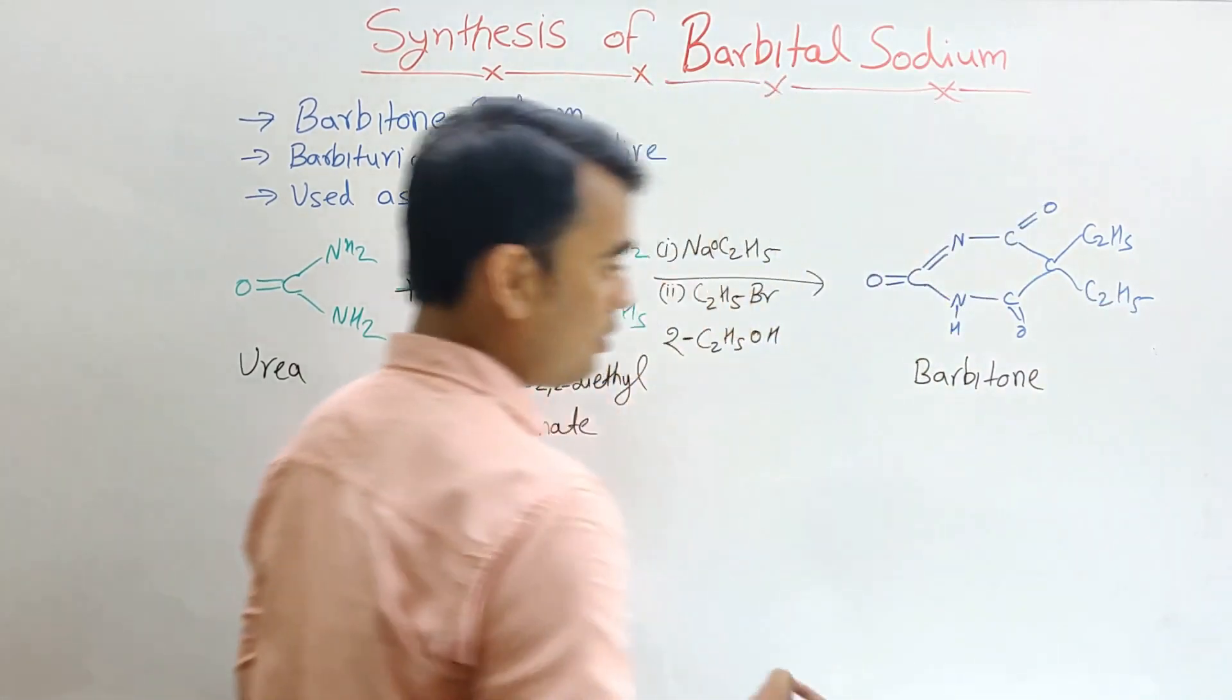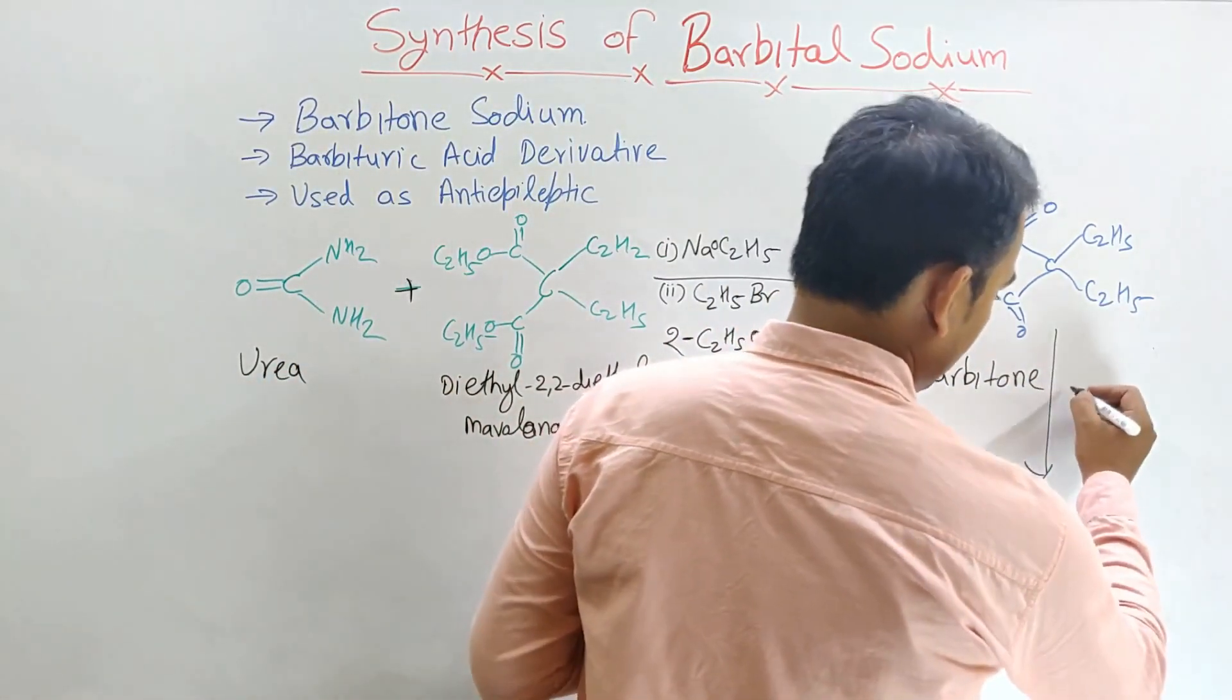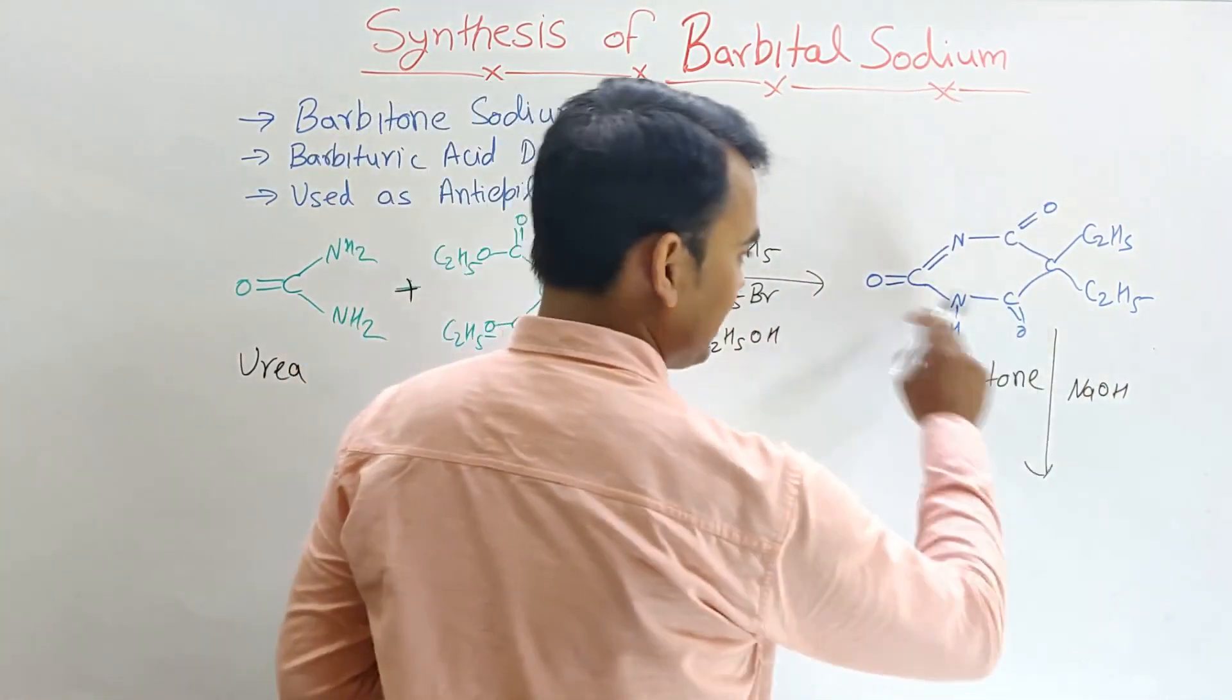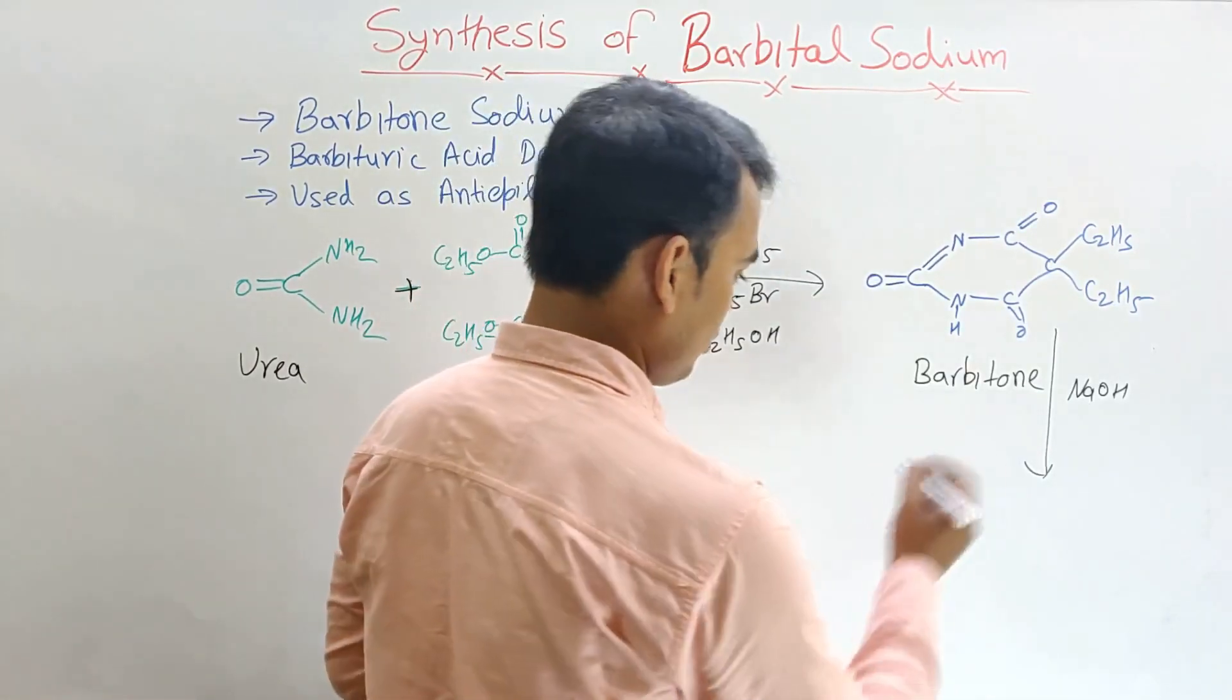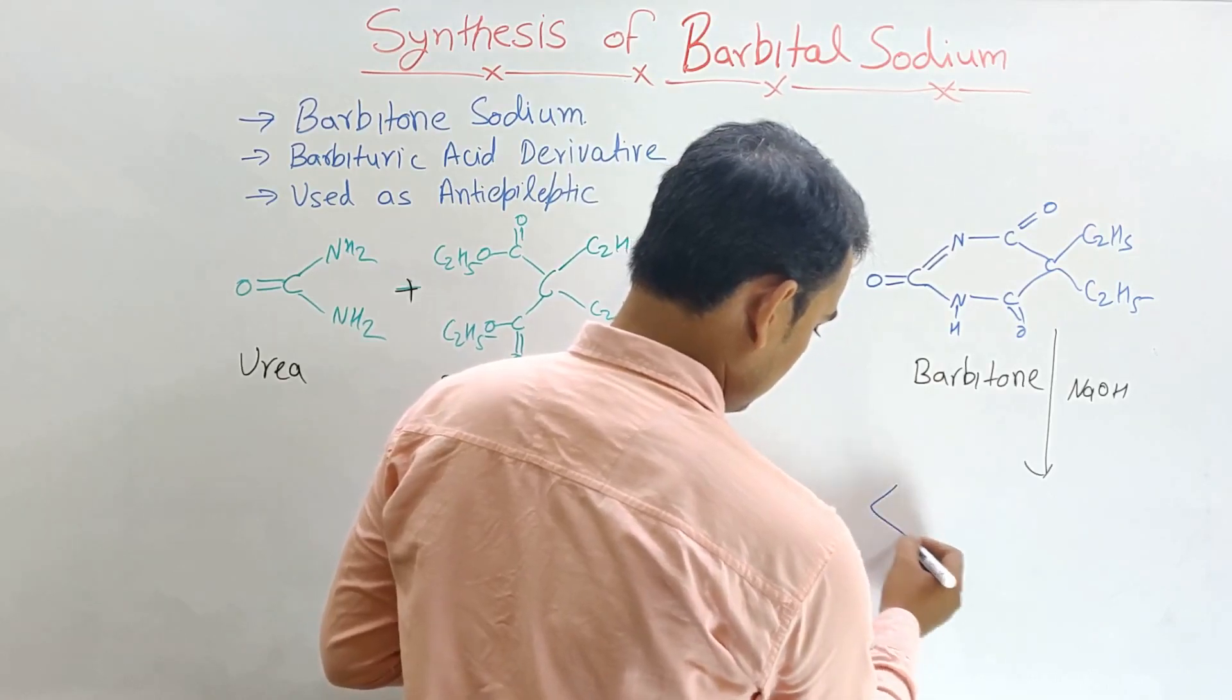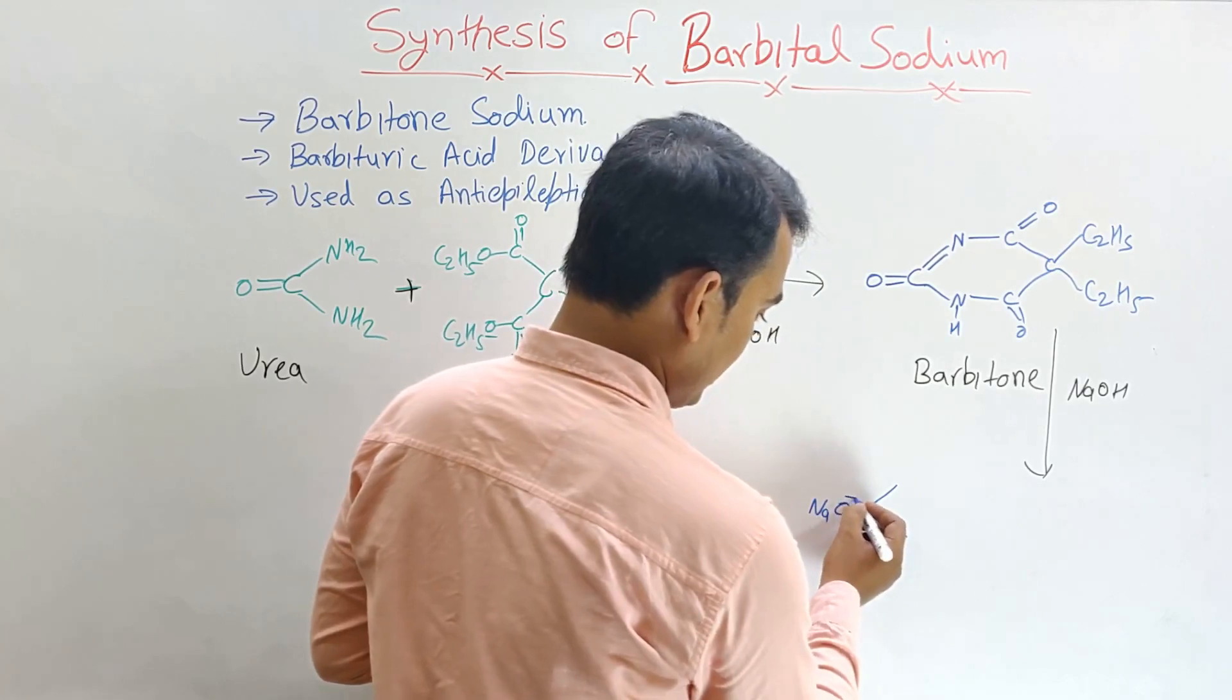Now, this barbitone when reacted with the sodium hydroxide, NaOH. Then what happens? This Na will bind on this oxygen and make it single bond like this. O, N, O has the negative.